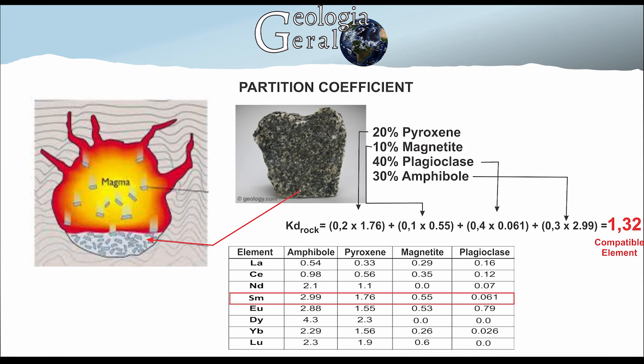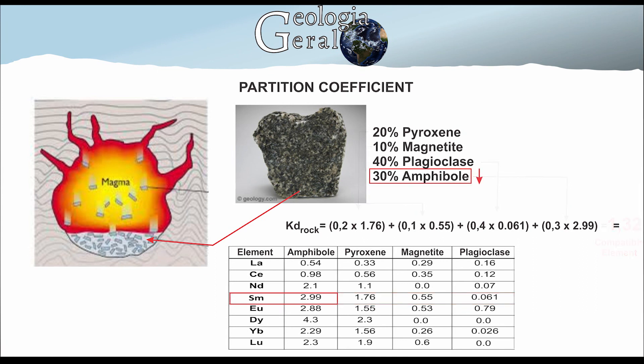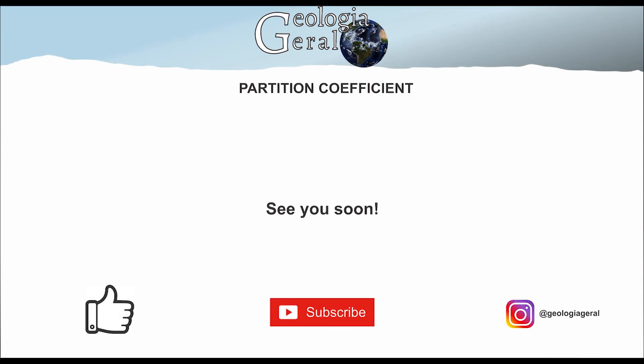It is interesting to note that if the percentages of minerals were different, we could have a case of incompatibility — there just needed to be less amphibol in the rock. So we see that an element can be highly compatible with a particular mineral, but if that mineral does not have a large amount in the rock, the element may not be compatible with it. Thank you for watching, and see you soon.